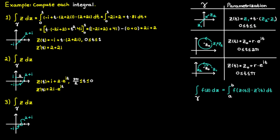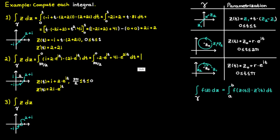We repeat the steps from the last example: replace all c's in the function with the parameterization and multiply by the derivative. The integral limits are the upper and lower limits for t. Simplifying, the integrand becomes minus 2 times e raised to the power of it plus 4i times e raised to the power of 2it. The antiderivative of this expression is straightforward. Recalling that i in the denominator is the same as minus i in the numerator, we simplify the first term. The last step is to evaluate at the upper and lower bounds of t.